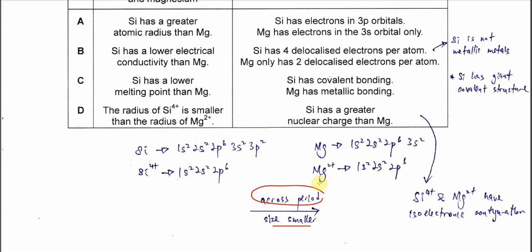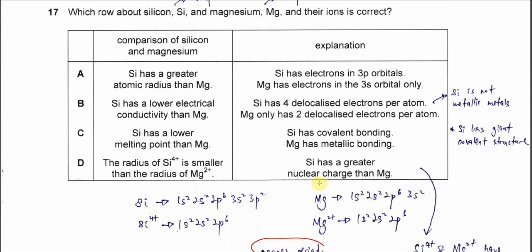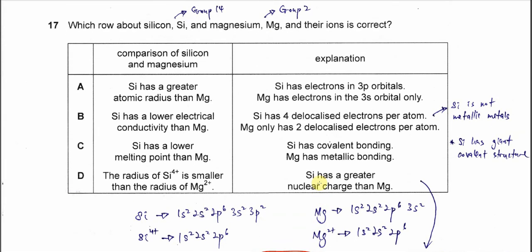Why is it smaller? Because the proton number is greater and they have constant shielding effect. Therefore this one is wrong. Of course, if the statement is wrong, how good the explanation is doesn't matter.